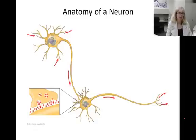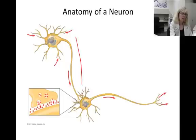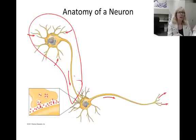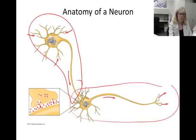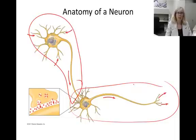This image shows one neuron signaling a second neuron. Please use chapter 48 in your book to label this diagram.